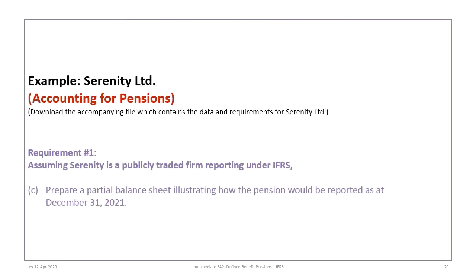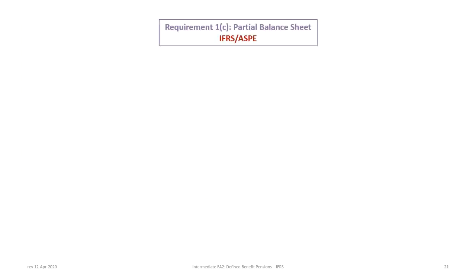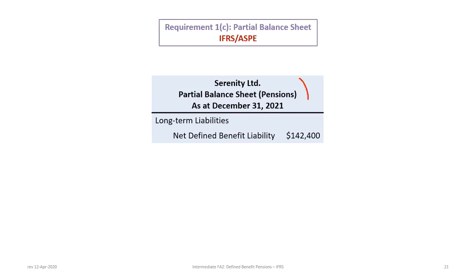The third requirement is to prepare a partial balance sheet illustrating how the pension would appear as at December 31st, 2021. In good form: heading the partial balance sheet as at December 31st, 2021. We know we have a liability — the NDB has a credit balance — so we classify the pension as a long-term liability. This makes sense, as the pension liability will not be exhausted within the next year, with people retiring over many years. The balance is $142,400.